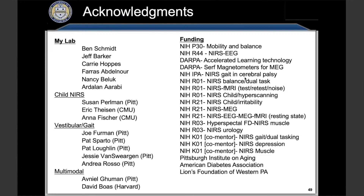In the Q&A, one question asked why NIRS is always limited to a small part of the cortex. The answer: you can do a whole-head probe, but think of it like high-density EEG — you might spend 30 minutes putting the probe on the head. Most NIRS studies target special populations like infants who won't sit for 30 minutes, so it's more of a practical limitation than a fundamental one.